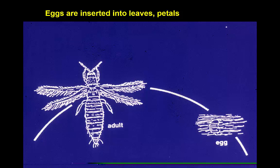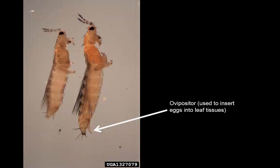Thrips are going to insert their eggs into leaves, petals, perhaps even a developing fruit, using the ovipositor. The female has a little spike-like ovipositor at the tip of her abdomen and she uses this to insert the eggs into the plant part — the leaf, the flower petal, the developing fruit. This actually sometimes results in a kind of injury that may be obvious, producing an oviposition wound.